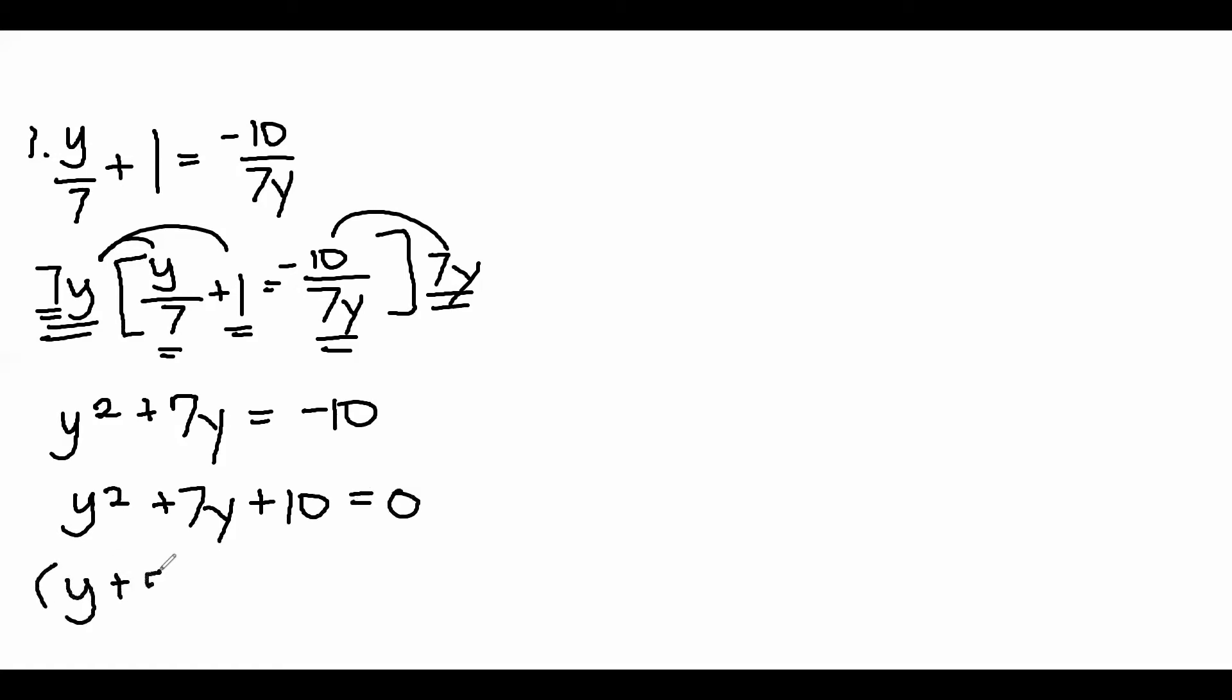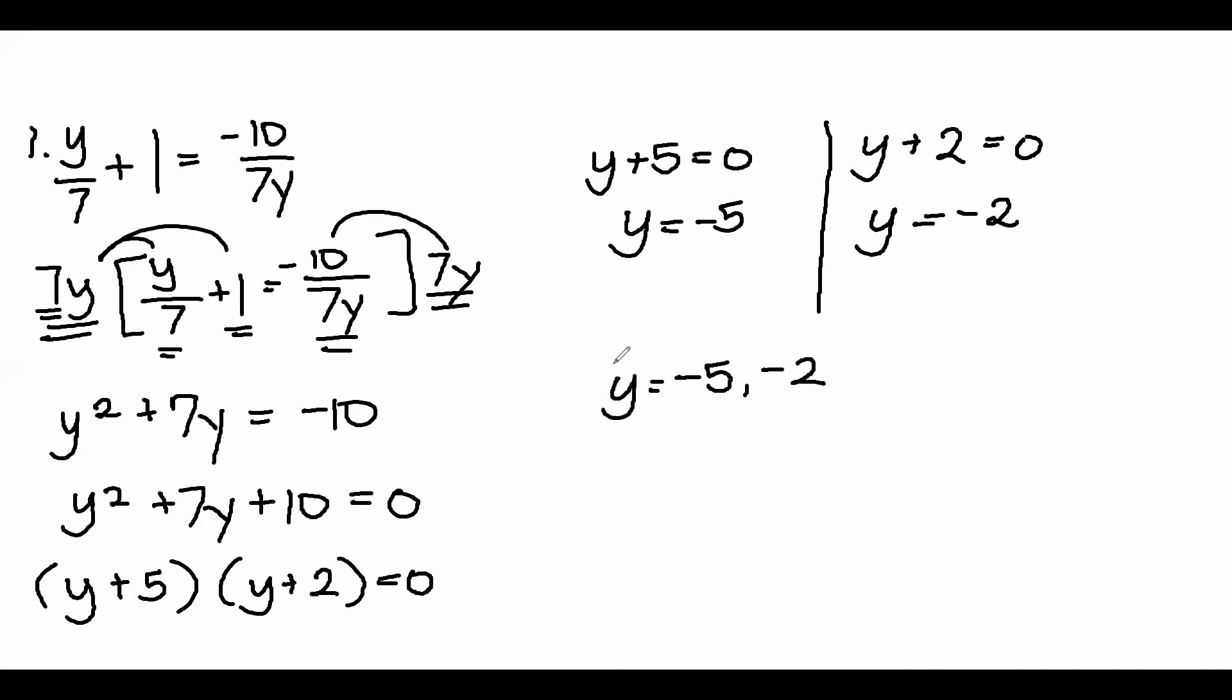Now, it's time for it to be factored out. So we have y plus 5 times y plus 2 is equal to 0. Now, we have y is equal to negative 5 and y is equal to negative 2. Therefore, the roots of our equation are negative 5 and negative 2.